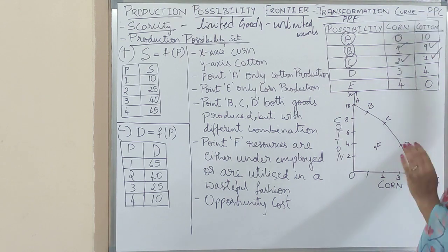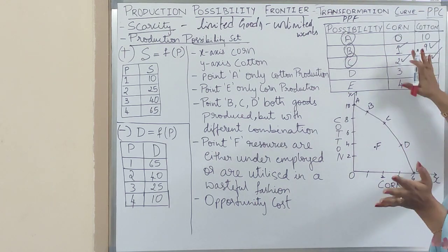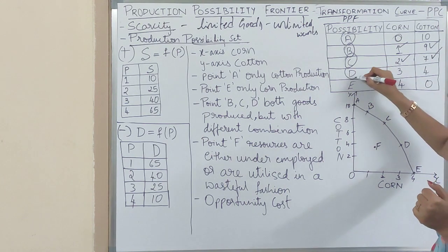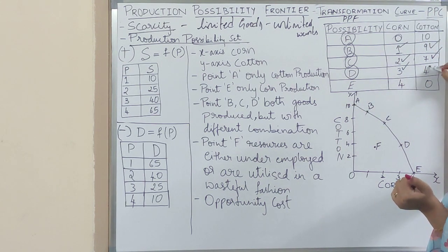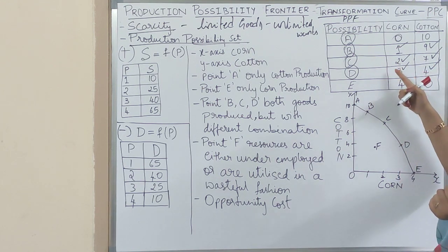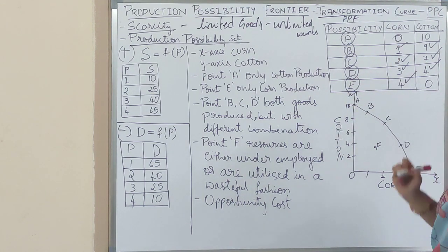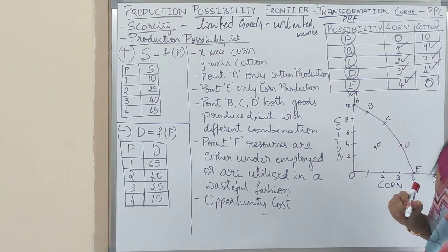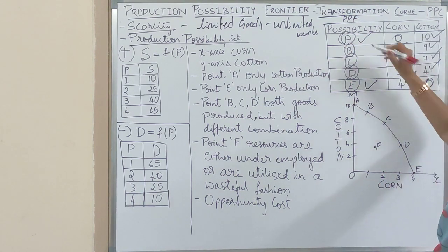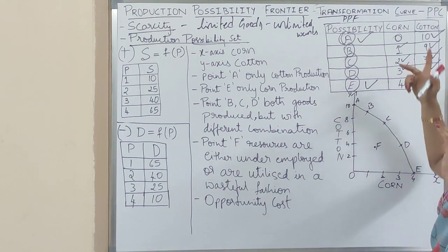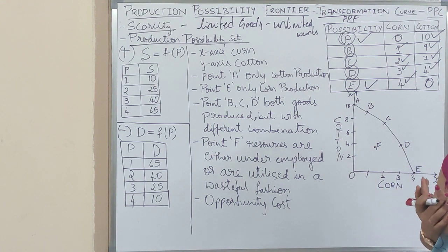If I want to produce more corn, I have to sacrifice cotton. If I want to produce more cotton, I have to reduce corn — so I have to go with vice versa choices. In option D, I increase one more unit of corn and reduce cotton production further. In option E, we produce 4 units of corn and 0 cotton. The extreme levels A and E — in combination A, I produce only cotton; in combination E, only corn. The other three combinations B, C, D produce both goods in different ratios.